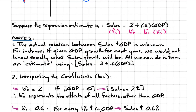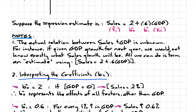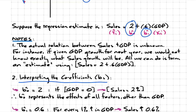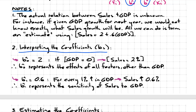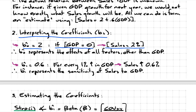How do you interpret the coefficients — the betas or Bs? We said assume B0 is 2 and B1 is 0.6. What does B0 indicate? If GDP were equal to 0, sales would be 2%. Let's check: if GDP is 0, then 0.6 times 0 equals 0, so sales growth would only be 2%. Therefore B0 represents the effects of all factors other than GDP.